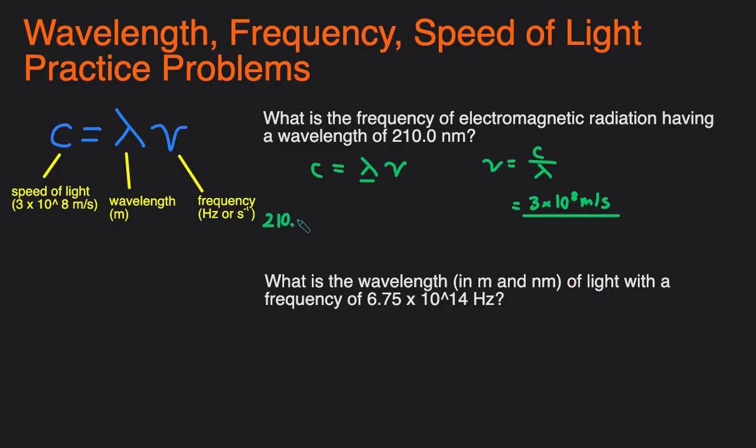210.0 nanometers times one, and in every one meter there's 10 to the 9th nanometers, and then you can see that nanometers cancel out, so then you'll be left in meters, which is approximately 2.1 times 10 to the negative 7 meters.